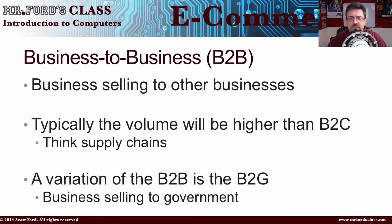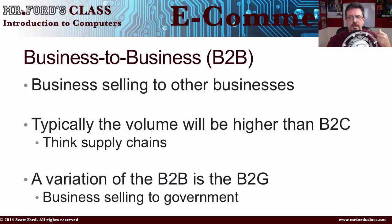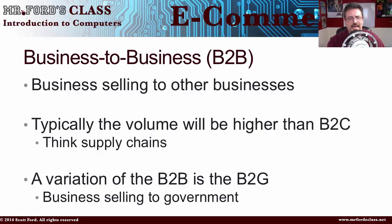The next one is business-to-business, B2B. Business-to-business is when a business sells directly to another business — we're talking massive volumes of stuff, like raw supplies. Think supply chain. For example, if you're a computer manufacturer like Dell, you might need motherboards made by Intel, so you're buying directly from Intel or AMD or whoever else makes motherboards. It's a business-to-business transaction involving massive quantities.